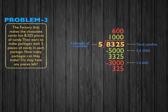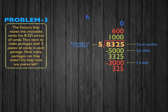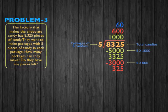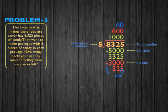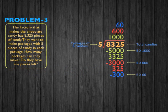Next, how many packages can we make out of tens to get 325? That would be 60. Because 60 times 5 equals 300. So 325 minus 300 gives us 25 pieces of candy left.